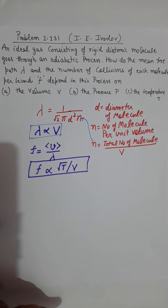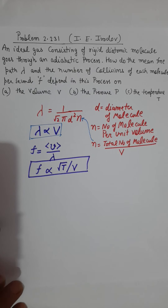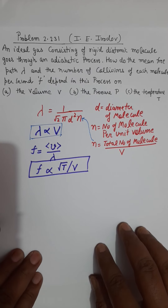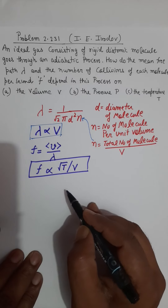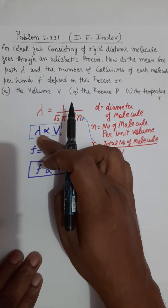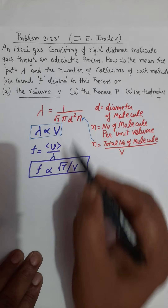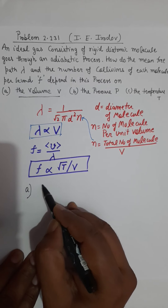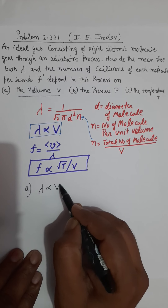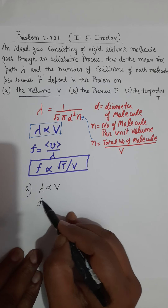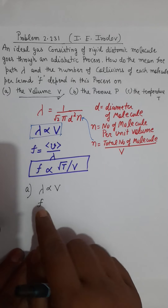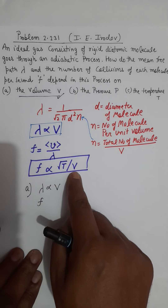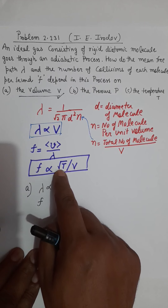So these two are the key concepts: mean free path lambda depends on volume, and collision frequency depends on square root of temperature divided by volume. We are dealing with an adiabatic process for a diatomic gas molecule. Part A: lambda is obviously proportional to volume. Now I want to find how the collision frequency depends on volume — that means we need to eliminate temperature.